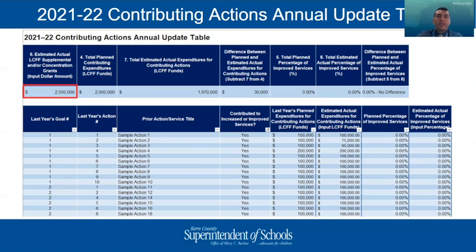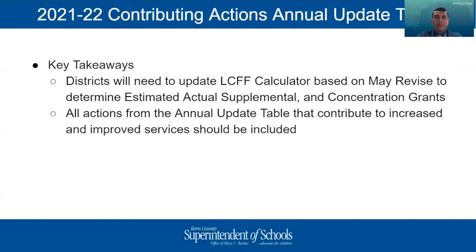The contributing actions annual update table isolates the actions from the annual update that increase or improve services. The majority of data will automatically populate, but users will need to input revised LCFF supplemental and concentration grant funding. The key takeaway: districts need to update their LCFF calculator based on the May revise to determine estimated actual LCFF entitlements — the base grant, supplemental grant, and concentration grant — all of which are needed for these tables. Districts should ensure that only contributing actions are included on this table.